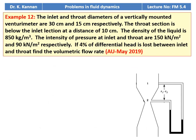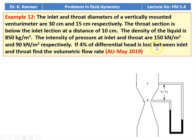Example number 12 from the May 2019 question paper: the inlet and throat diameter of a vertically mounted venturi meter is 30 centimeters and 15 centimeters respectively. The throat section is below the inlet section at a distance of 10 centimeters. The density of the liquid is 850 kg/m³. The intensity of pressure at the inlet and throat are 150 kg/m² and 90 kg/m² respectively. Four percent of the difference of head is lost between inlet and throat; find the volumetric flow rate.